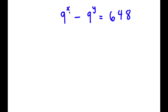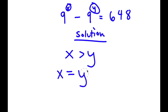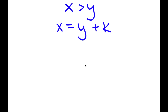In this problem, I have 9 to the power of x minus 9 to the power of y is equal to 648. For my solution, I'll first look at x and y. By inspection, x is going to be greater than y, because if x were less than y, the result would be negative — and it's positive, so x is greater than y. This means we can say x is equal to y plus some number k. So I can replace x with y plus k, giving 9 to the power of y plus k minus 9 to the power of y equals 648.